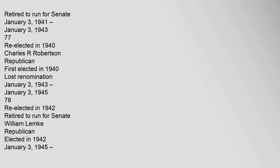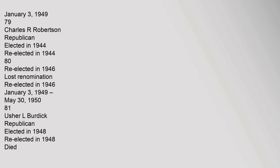From January 3, 1941 to January 3, 1943 (77th Congress): re-elected in 1940; Charles R. Robertson, Republican, first elected in 1940, lost renomination. From January 3, 1943 to January 3, 1945 (78th Congress): re-elected in 1942, retired to run for Senate; William Lemke, Republican, elected in 1942. From January 3, 1945 to January 3, 1949 (79th–80th Congresses): Charles R. Robertson, Republican, elected in 1944, re-elected in 1946, lost renomination.